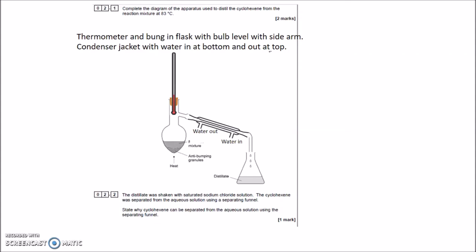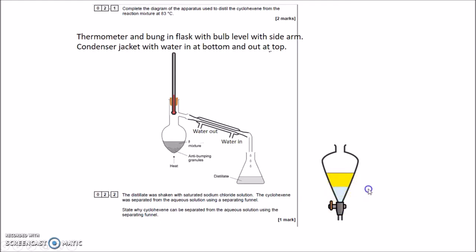The distillate was shaken with saturated sodium chloride solution, and the cyclohexene was separated from the aqueous solution using a separating funnel. Explain how a separating funnel works. A separating funnel has two different layers that don't mix — they're immiscible. You turn the tap and run the bottom layer off; when the top layer reaches the bottom, you close the tap. It's a physical process where you collect the lower layer in a beaker.